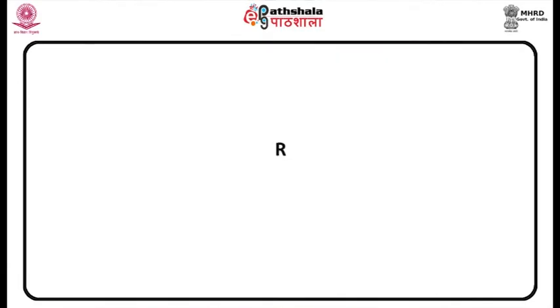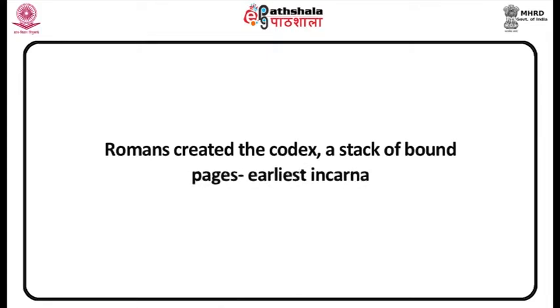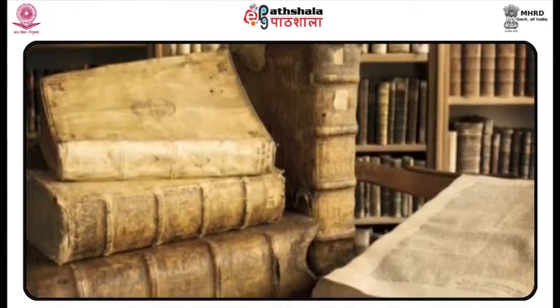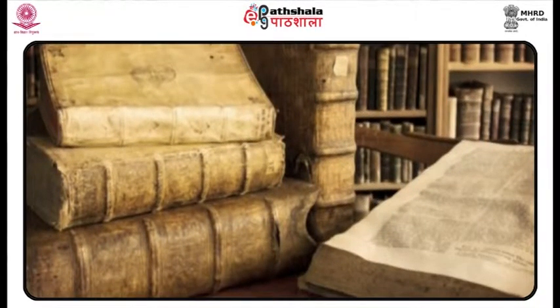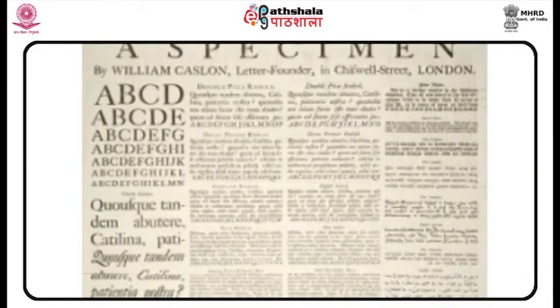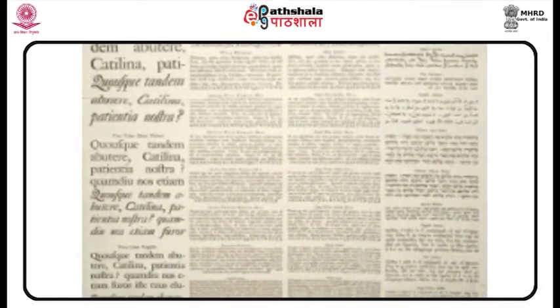Bound Books: The Romans created the Codex — a stack of bound pages that is recognized as the earliest incarnation of the book. The first codices were made of bound wax tablets, but these were later replaced by animal skin parchment that more clearly resembled pages. The early Christians became some of the first to adopt the new technology, using it extensively to produce copies of the Bible.